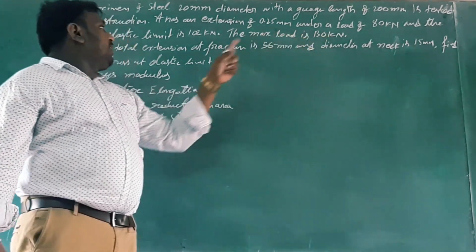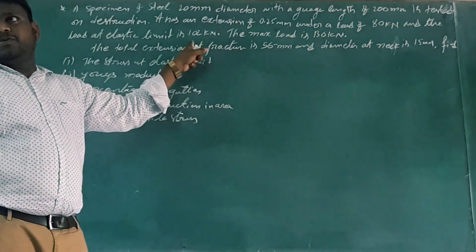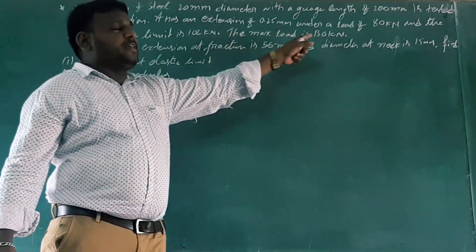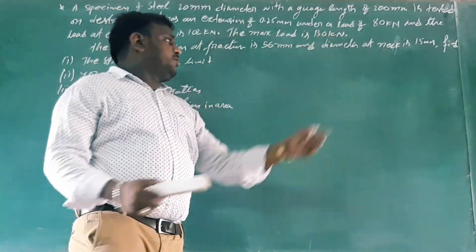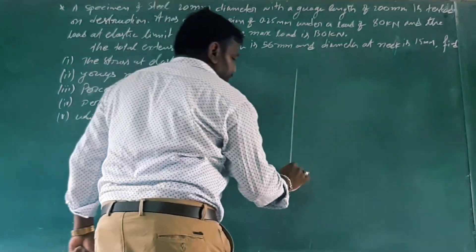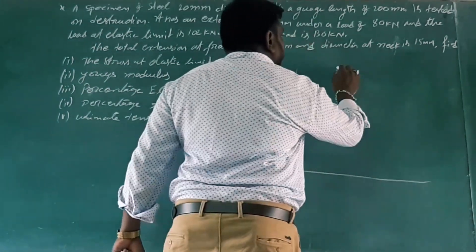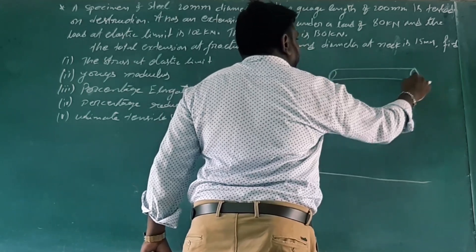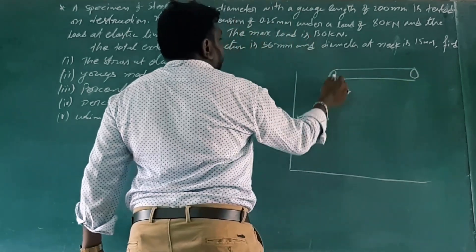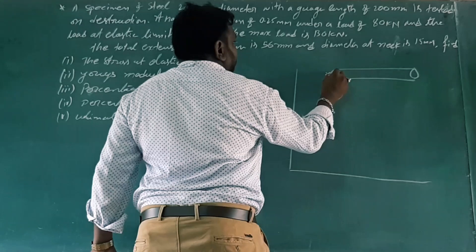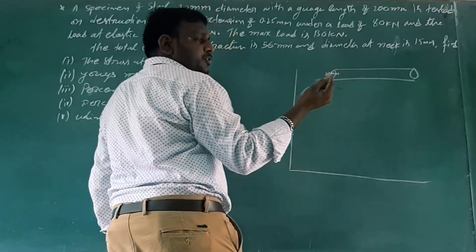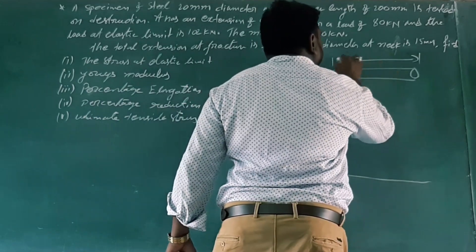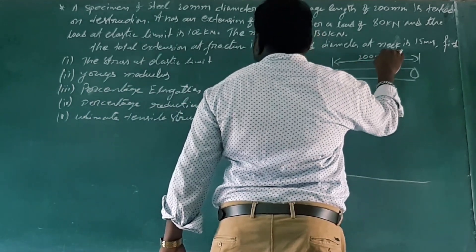The load at the proportional limit is 80 kilonewtons. The maximum load — that is, the ultimate load — is 130 kilonewtons. The extension at the proportional limit is 0.25 mm. The diameter of the specimen is 20 mm and the gauge length is 200 mm.